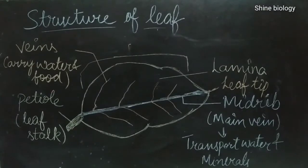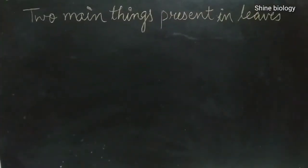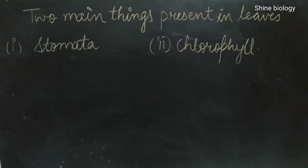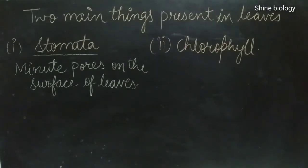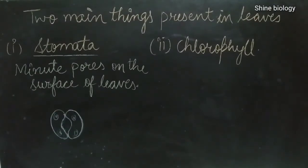Next are the things present in the leaf that perform the main function of photosynthesis. There are two main things present in leaves: stomata and chlorophyll. Stomatas are minute pores — tiny holes present on the surface of the leaf. These are too small to see with the naked eye and are visible only under a microscope.